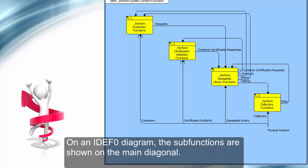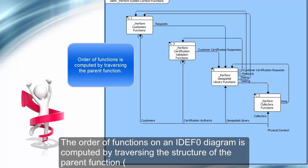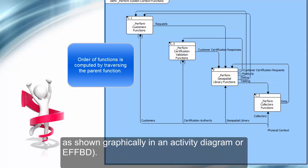On an IDEF0 diagram, the subfunctions are shown on the main diagonal. The order of functions on an IDEF0 diagram is computed by traversing the structure of the parent function, as shown graphically in an activity diagram or EFFBD.